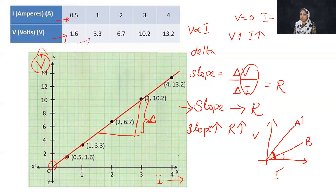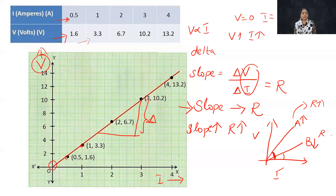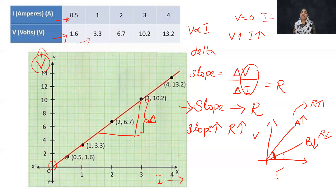Comparatively, if there is a bigger angle, slope is bigger for A and smaller for B. So slope is bigger for A — higher resistance — and B is smaller resistance.